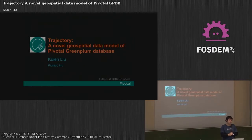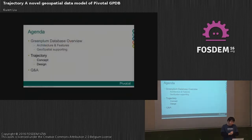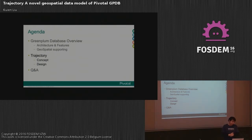Hi everyone. I'm a researcher working in databases. Similar to the last talk, we try to achieve geospatial data management in a database — now a traditional database called Kumbang. My name is Kuin, coming from Jibato. In this talk, I'll first give a quick overview of the database, and then introduce our plans for geospatial, especially on the trajectory.